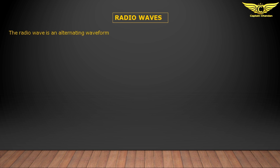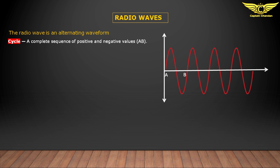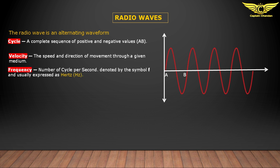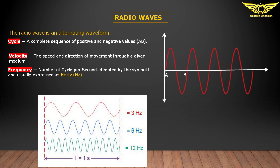The radio wave is an alternating waveform. Here are some definitions. Cycle: a complete sequence of positive and negative values. In the diagram, starting from point A, the upper wave is the positive side and the lower wave is the negative side — one positive and one negative together make one complete cycle. Velocity: the speed and direction of movement through a given medium. Frequency: the number of cycles per second, denoted by symbol F and expressed in hertz (Hz) — meaning how many complete cycles pass in one second.